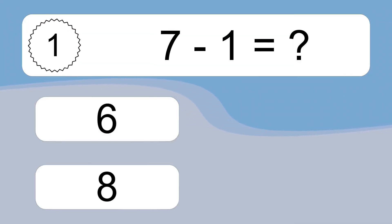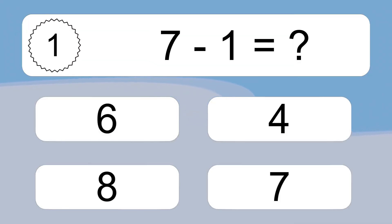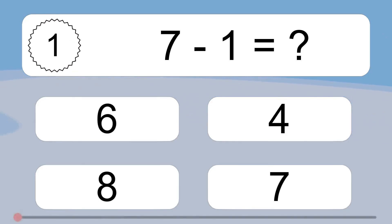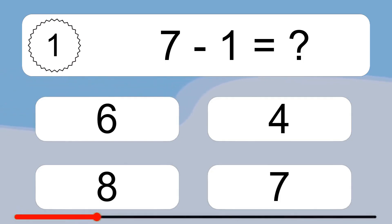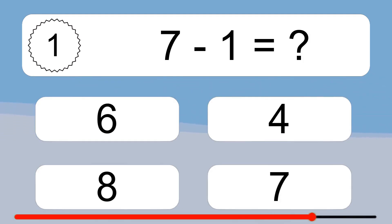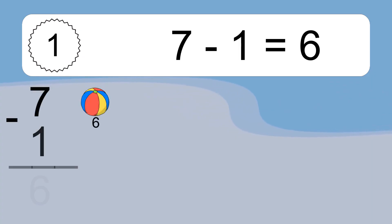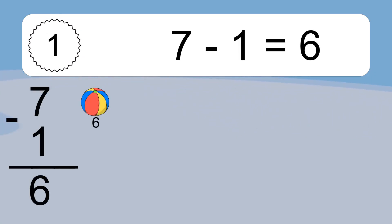7 minus 1 equals what? 7 minus 1 equals 6. Let's count it. 6.